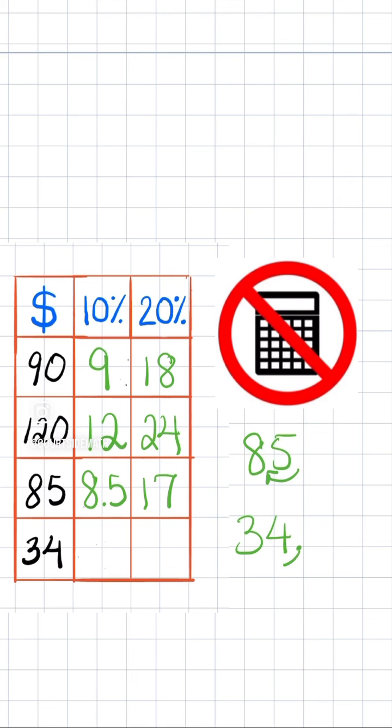And lastly, if you had $34 for your check, moving it back one space gets us $3.40 for 10%. So if we double that, we'll get 20%, and that gives us $6.80.